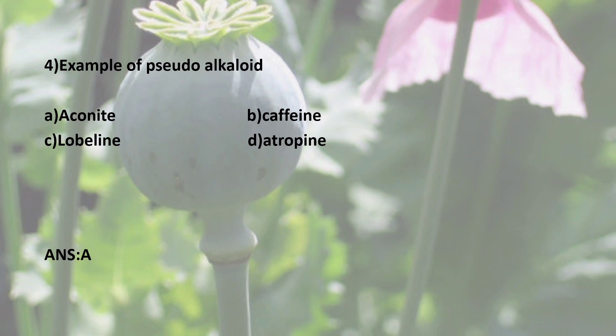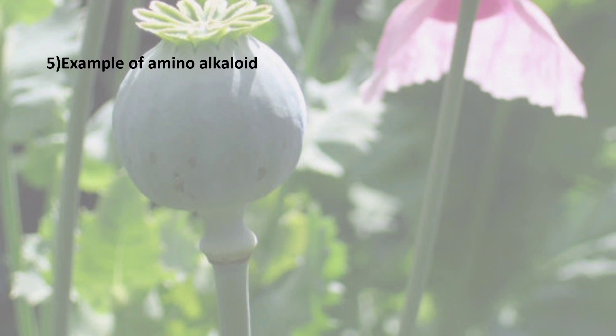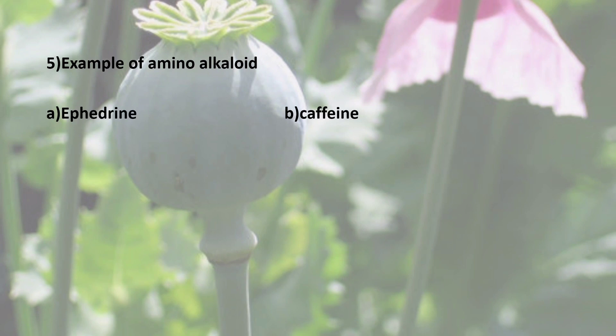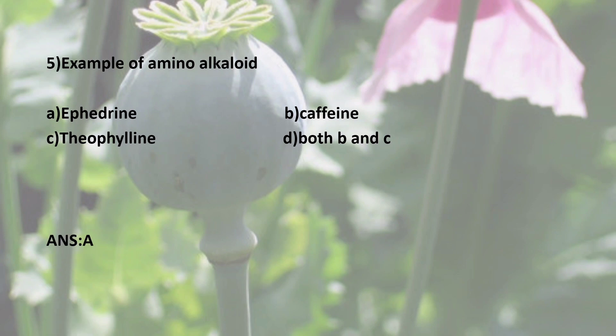Fifth question: Example of Amino Alkaloid. Amino Alkaloid is another name for Proto Alkaloid. Options are: A) Ephedrine, B) Caffeine, C) Theophylline, D) Both B and C. The correct answer is A — Ephedrine is an example of an Amino Alkaloid.